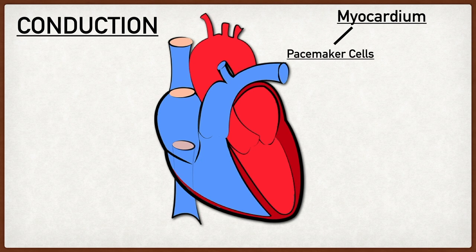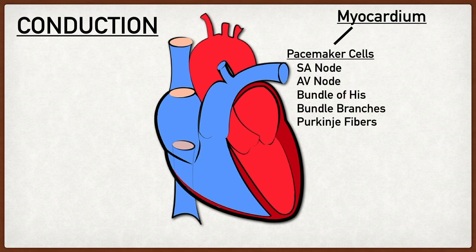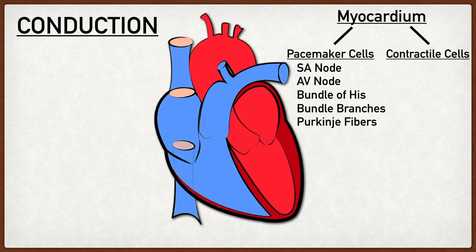Pacemaker cells are primarily located in the SA node, AV node, bundle of His, right and left bundle branches, and the Purkinje fibers — these make up the bulk of the intrinsic conduction system. The other cell type is the contractile cells, which make up the bulk of the myocardium. These are the cardiac muscle cells that lead to squeezing and contraction that ultimately pushes blood forward.